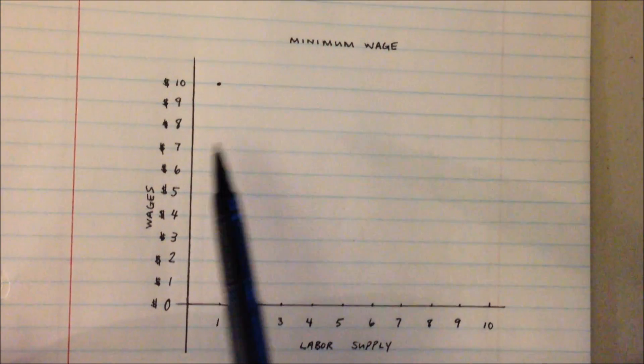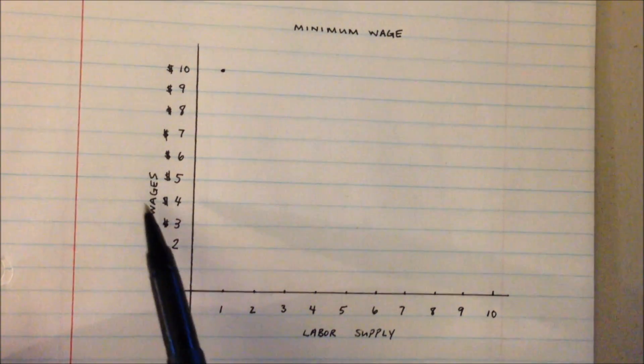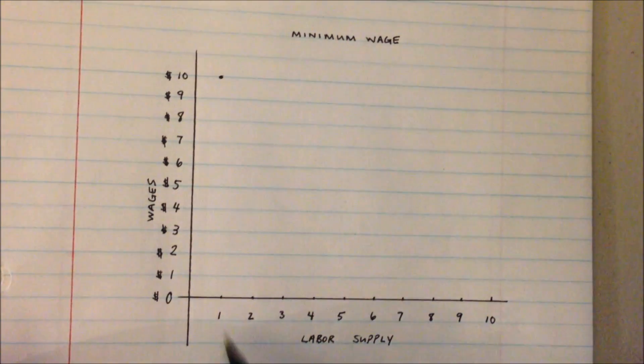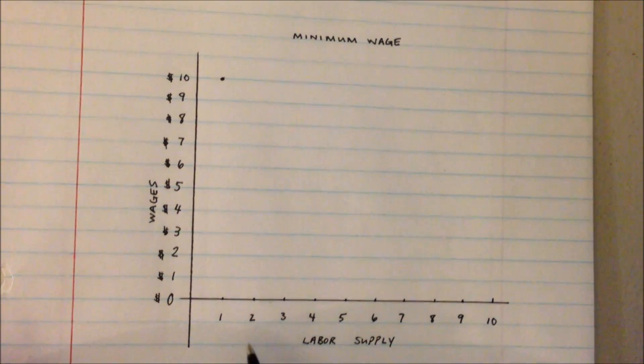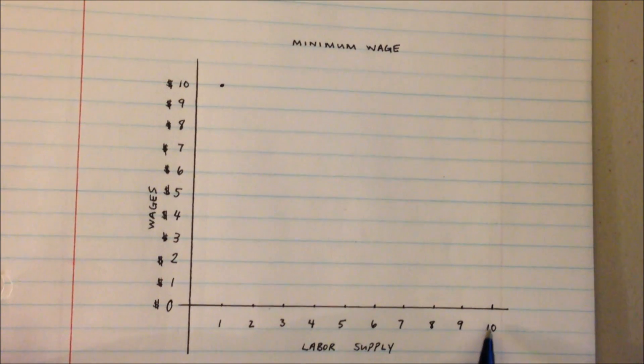I want to take a minute and draw a minimum wage model. We're going to graph wages on our y-axis going from $1 to $10, and on our x-axis we're going to have a labor supply of 1 worker, 2 workers, 3 workers to 10 workers.